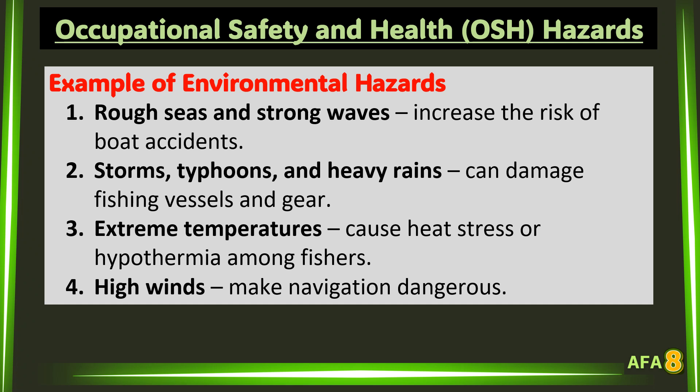Examples of environmental hazards affecting fisheries: 1. Rough seas and strong waves increase the risk of boat accidents. 2. Storms, typhoons, and heavy rains can damage fishing vessels and gear. 3. Extreme temperatures cause heat stress or hypothermia among fishers. 4. High winds make navigation dangerous.